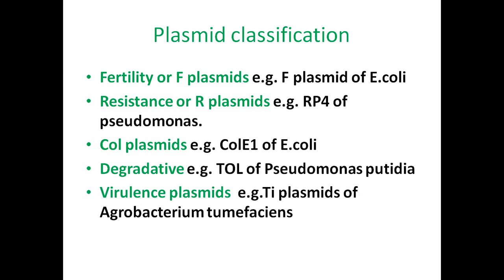The next type is virulence plasmids. These confer virulence to the host cell — that is, if these types of plasmid are present in the bacteria, the bacteria are able to cause disease in the host organism. An example is the Ti plasmid of Agrobacterium tumefaciens, which induces crown gall disease on dicotyledonous plants.